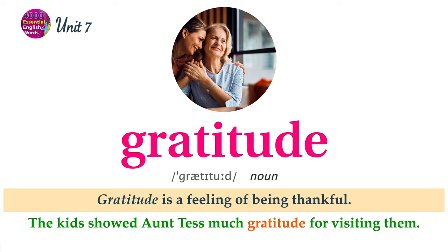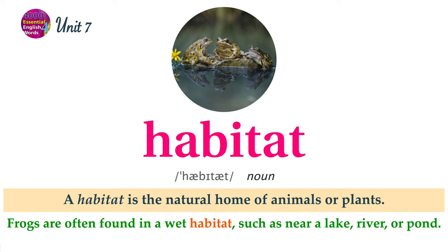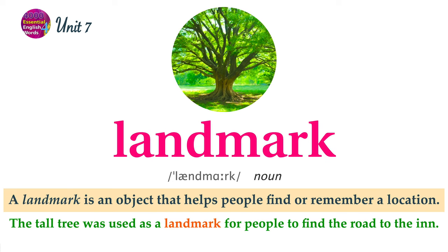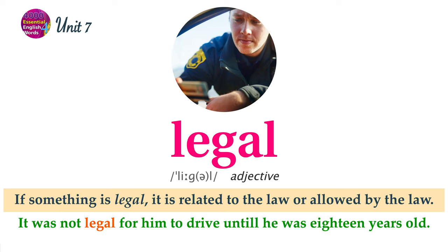Gratitude is a feeling of being thankful. The kids showed Aunt Tess much gratitude for visiting them. A habitat is the natural home of animals or plants. Frogs are often found in a wet habitat, such as near a lake, river, or pond. To intervene means to help stop a problem between two people or groups. The students argued until the teacher intervened. A landmark is an object that helps people find or remember a location. The tall tree was used as a landmark for people to find the road to the inn. If something is legal, it is related to the law or allowed by the law. It was not legal for him to drive until he was 18 years old.